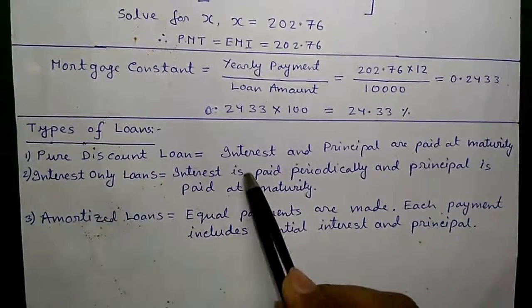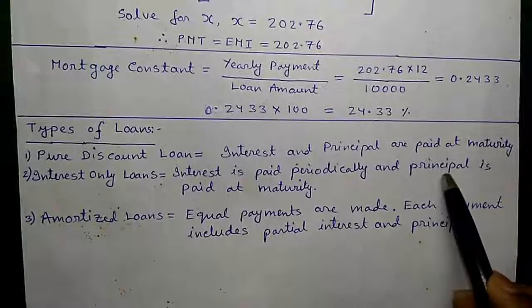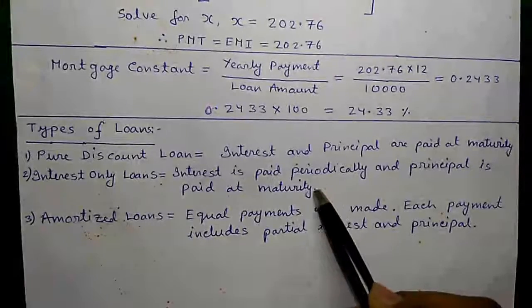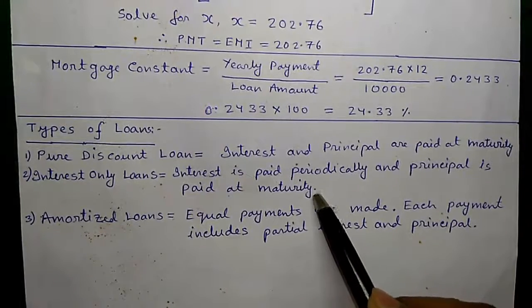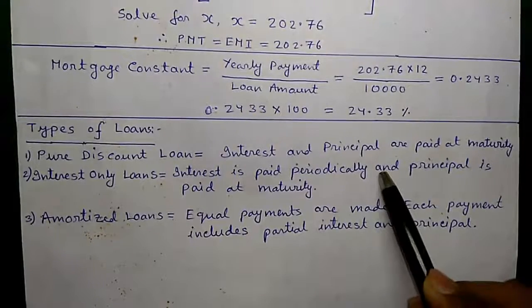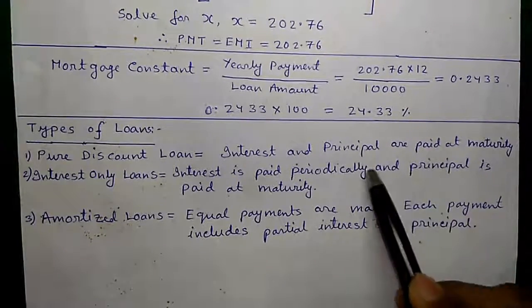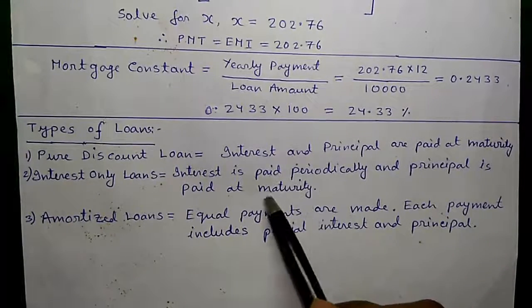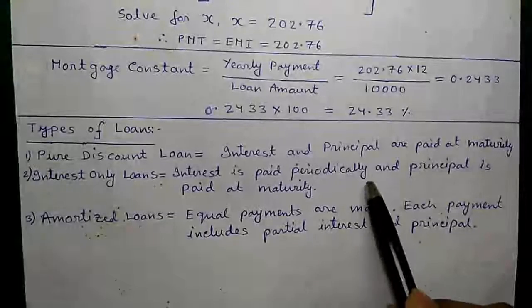Interest only loan where interest is paid periodically and principal is paid at maturity. Example: government or corporate houses borrowing money from public by issuing bonds where the company or government will pay you periodic interest quarterly or yearly, and principal they will return after the term period.